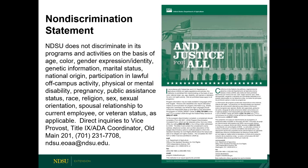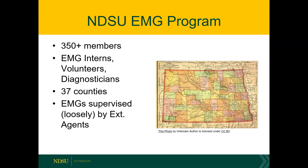Starting with our program background, we have somewhere between 350 and 400 members, which fluctuates as some retire and new master gardener interns join. We have three classes of master gardeners: interns taking the class and working on volunteer hours, certified volunteers, and master gardener diagnosticians. They are in 37 out of 51 counties, loosely supervised by extension agents who are quite overworked — some are running programs covering livestock, crops, weeds, and horticulture.